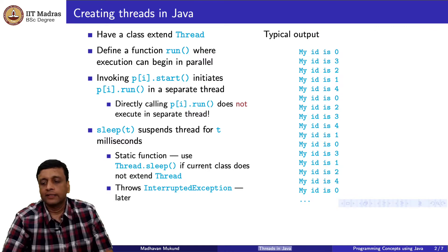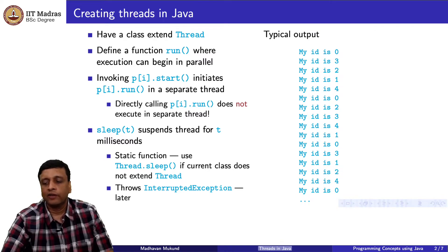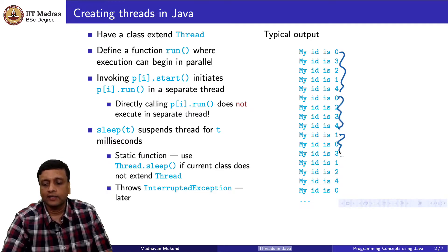Whereas, if I do p[i].start, then I get this kind of an interleaved behavior where in some sequence, these 0, 1, 2, 3, 4, these 5 processes keep printing their id and the order in which they print it keeps changing because the scheduling is kind of random.